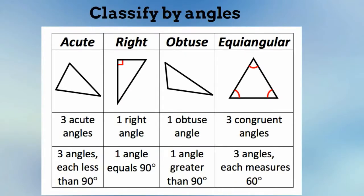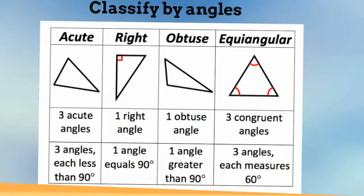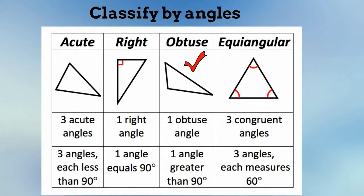You can also classify triangles by their angles. An acute triangle has three angles each less than 90 degrees. A right triangle has one angle that equals 90 degrees. An obtuse triangle has one angle greater than 90 degrees. And an equiangular triangle has three angles each of 60 degrees.